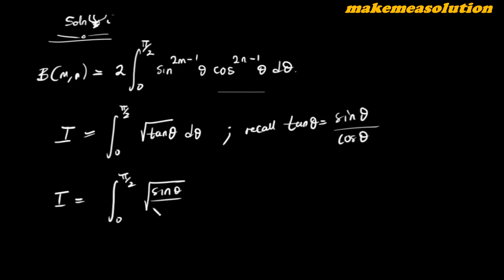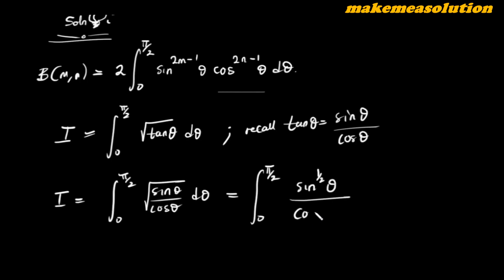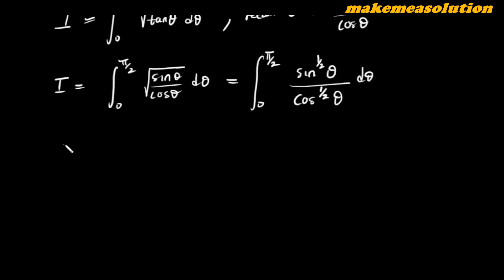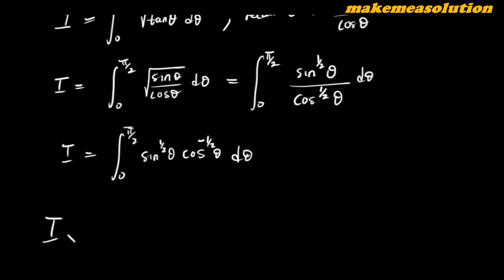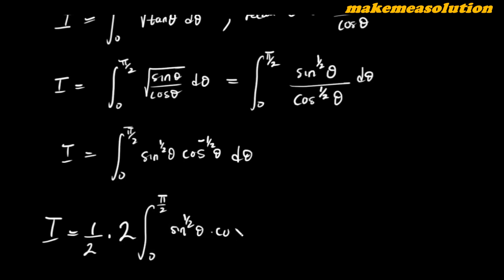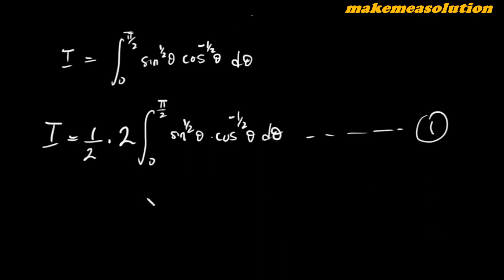Substituting, I becomes the integral from zero to π/2 of √(sin θ / cos θ) dθ. This is equivalent to the integral from zero to π/2 of sin^(1/2)(θ) · cos^(-1/2)(θ) dθ by the law of indices. So I is still equivalent to (1/2)·2 times the integral from zero to π/2 of sin^(1/2)(θ) · cos^(-1/2)(θ) dθ. This is equation one.